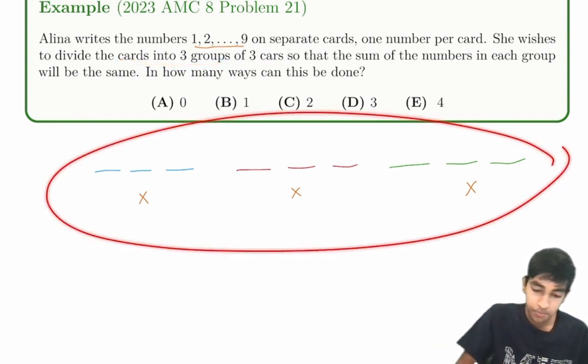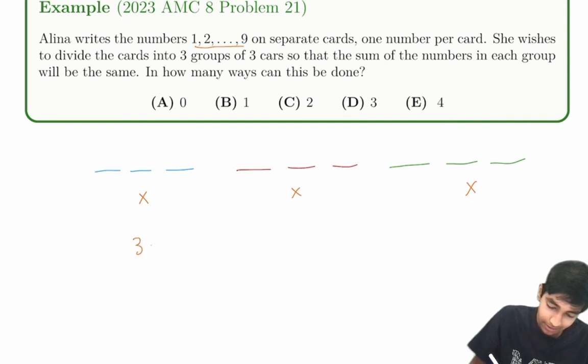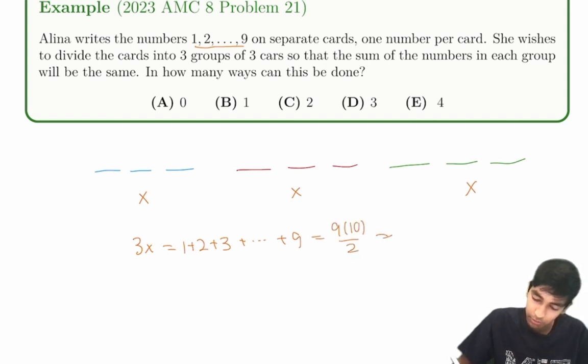And that means the total sum, 3x, is just 1 plus 2 plus 3 plus all the way till 9, which is 9 times 10 divided by 2 equals 45. So x equals 15. Aha! So the sum of each of these groups of three numbers is just 15.